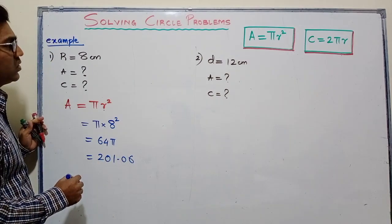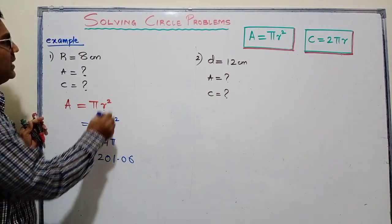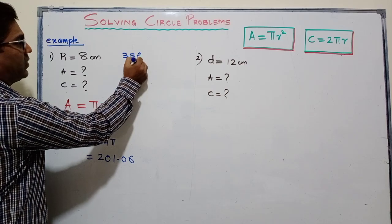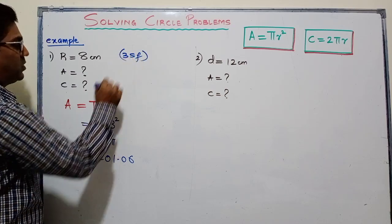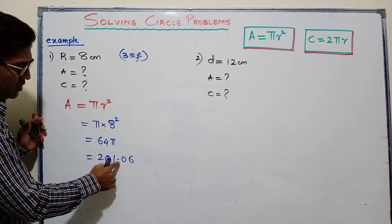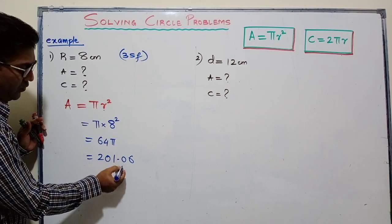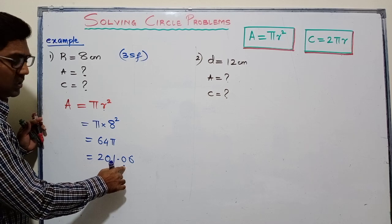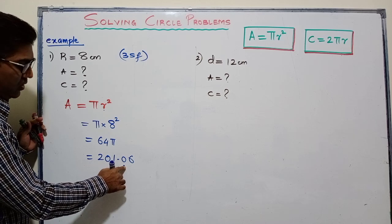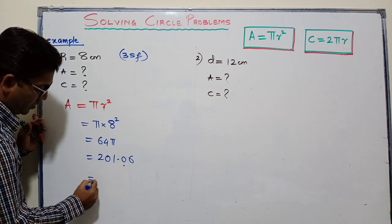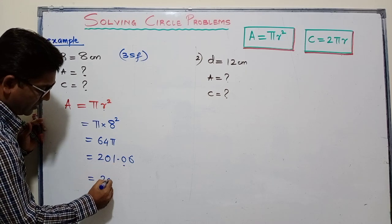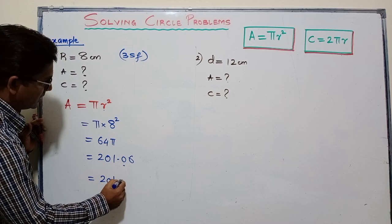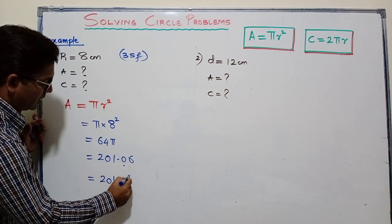If the question asks us to round to the nearest three significant figures, we want only the first three digits. We look at the fourth digit — since it is 0, it will not affect our answer. So the final answer for area is 201 cm².